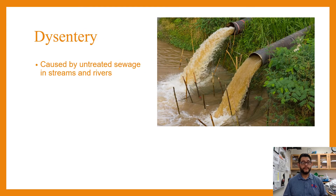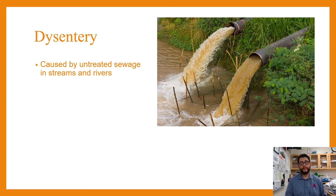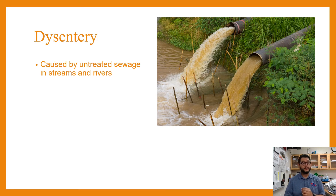So when we're talking about this, here's a couple of examples. Dysentery is a disease that can be spread through untreated sewage and in streams and drinking water that's available to us. So that's one way that the environment can be toxic to us and can lead to an effect on human health.